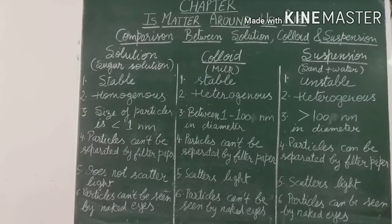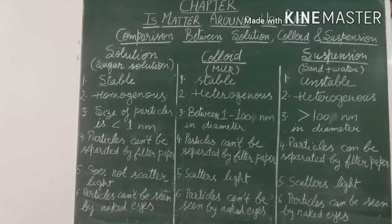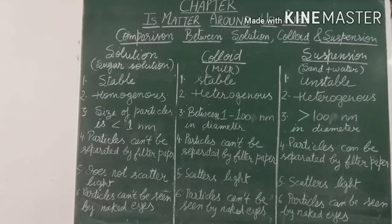The first parameter is stability. Stability means when we make a solution and keep it for some time, what will happen to it. True solutions are stable — if we keep the solution, it will remain as it is. Colloids are also stable, but suspension is unstable.